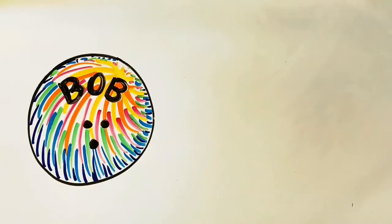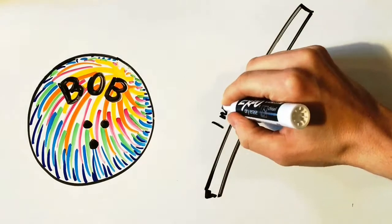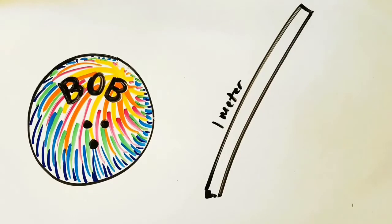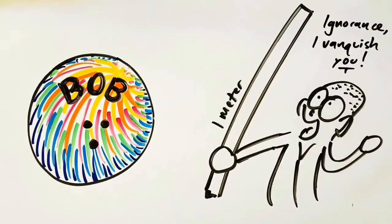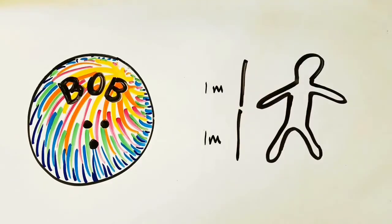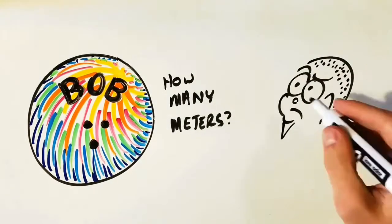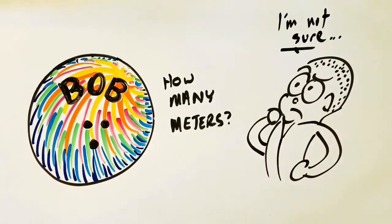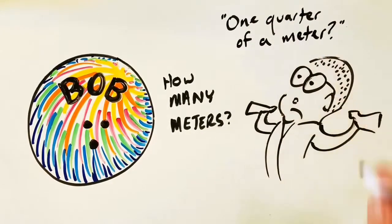Let's go back to our bowling ball. How can we describe its size? We can describe the size of any object by comparing it to a meter — a metric unit of length that is a little longer than 3 feet. An average adult human is about 2 meters tall. So how can we use meters to describe an object about the size of a bowling ball? Would we say that it's one quarter of a meter across? That's sort of a mouthful.